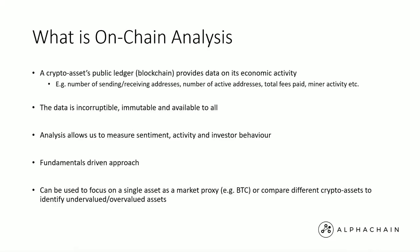So to begin, what is on-chain analysis? A crypto asset's public blockchain ledger provides data on its economic activity. We can look into the blockchain — there are many freely available websites where we can do that. For example, on the Ethereum blockchain we can use Etherscan, a very well-known Ethereum-based blockchain scanner, where we can look directly into transactions on the blockchain. But data providers give us clean data where we can look at independent parts of the data on-chain, such as number of sending or receiving addresses, number of active addresses, total fees paid, miner activity, and lots more — all nicely cleaned by the data providers.